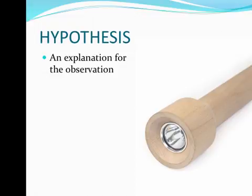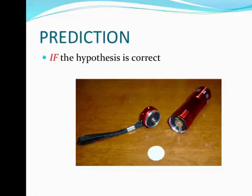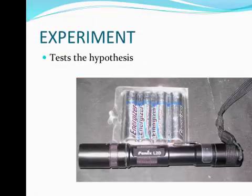The third step of the scientific method is a hypothesis. This is an explanation for your observation. It's something that can be tested. So my hypothesis is that the flashlight's batteries are dead. The fourth step of the scientific method is a prediction. The prediction is if the hypothesis is correct. So if the batteries are dead, I'm going to perform an experiment which is going to test the hypothesis. So I will replace the batteries with new ones.